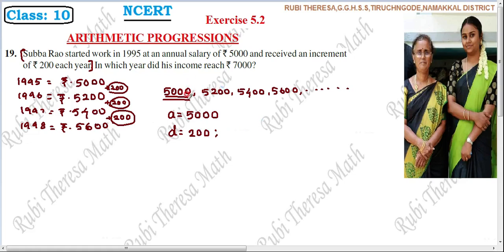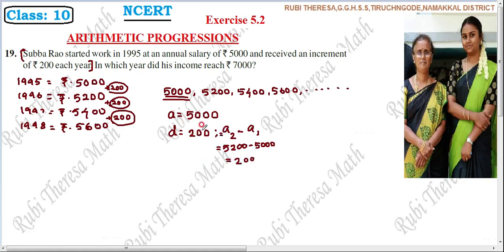We can verify: second term minus first term — A2 minus A1 is 5200 minus 5000 which equals 200. So the common difference is confirmed. Now the question asks: in which year did his income reach Rs. 7000? We need to find which term of the sequence equals Rs. 7000.